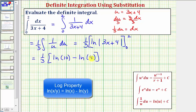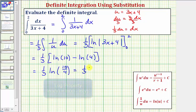Notice here we can combine these two logs using our difference property of logarithms. We can write this as one third natural log of ten divided by four. Of course, that simplifies to five halves. So the exact value is one third natural log of five halves.